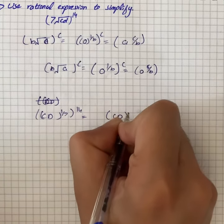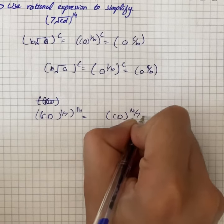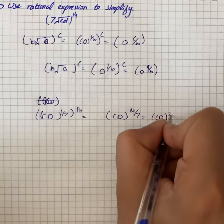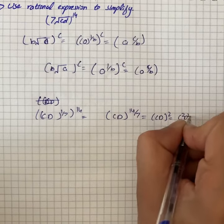This simplifies to cd whole squared, that is equal to c squared d squared. So our solution is c squared d squared.